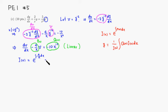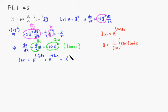Evaluating the integral: negative 4 is a constant, and the antiderivative of 1/x is natural log of x. So we get e to the negative 4 ln(x), which equals x to the negative 4 power. That is our integrating factor.